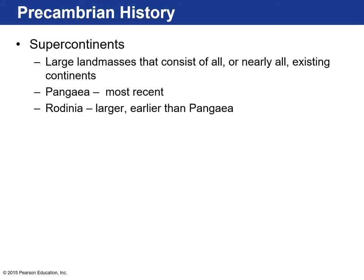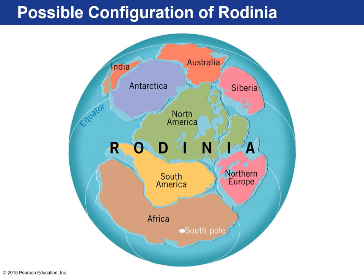There were supercontinents back in Precambrian history. Pangea was the most recent, but there was at least one other supercontinent — Rodinia — actually larger than Pangea, occurring during the Precambrian about 1.1 billion years ago. Based on the evidence collected, North America was kind of the center of this large major landmass.